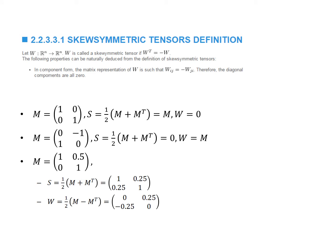Here are some numerical examples, starting with a symmetric matrix M. Since M is originally symmetric, when I take M plus its transpose and divide by two, S will be equal to M itself, while the skew-symmetric component W will be equal to zero. If instead I start with M that is originally skew-symmetric, S will be zero while W will equal M. If M is neither symmetric nor skew-symmetric, I get a nonzero symmetric component and a nonzero skew-symmetric component that sum to M.